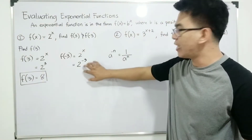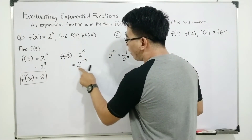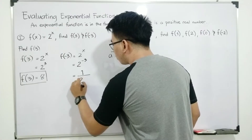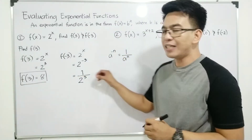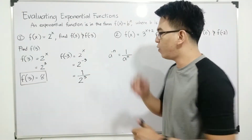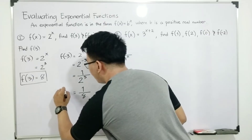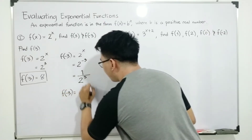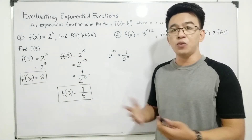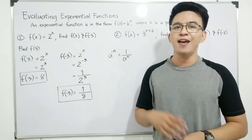As you can see, it has an invisible 1 in the numerator. So to make it positive, we rewrite it as 1 over 2 raised to 3. Simplifying your denominator, which is 2 raised to 3, it will give you the answer of 1 over 8. Therefore, your f of negative 3 is equal to 1 over 8, when we evaluate the function f of x is equal to 2 raised to x. I hope from this first example, you already know how to evaluate exponential functions.